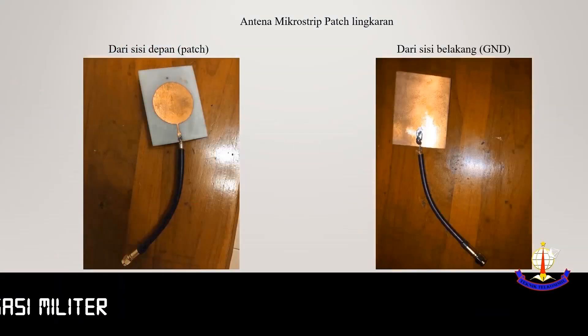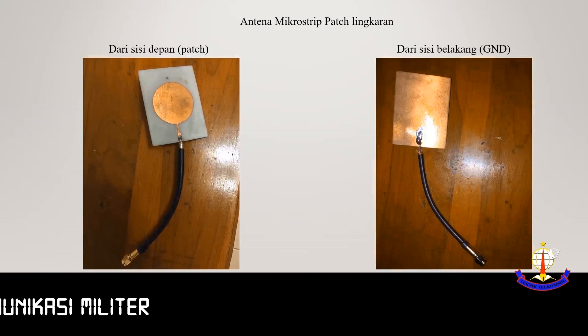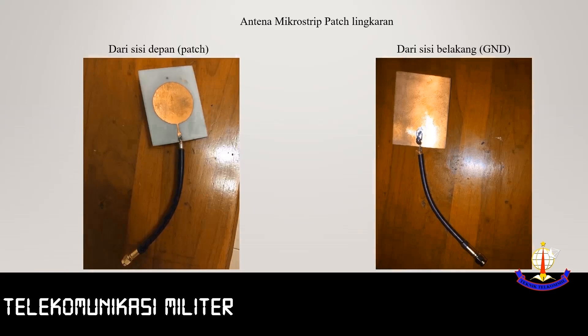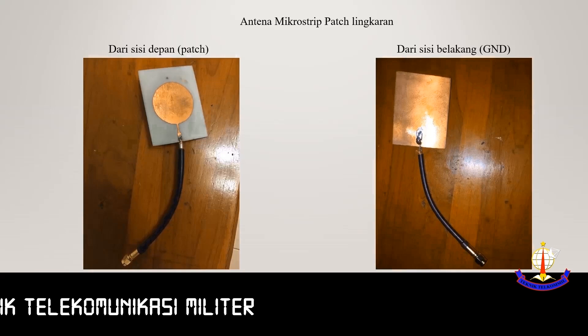Ini adalah tampilan depan dan belakang antena microstrip lingkaran. Dari sisi depan terlihat bentuk sirkular yang telah digambar. Dari sisi belakang berfungsi sebagai ground plane. (This is the front and back view of the circular microstrip antenna. The front side shows the circular patch design, while the back side serves as the ground plane.)